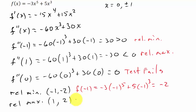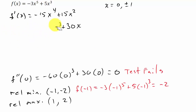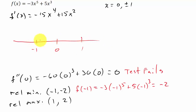Now for zero, the test fails, so that means we have to go back to the first derivative test. This is why you don't use the second derivative — a lot of times it's more work. To do the first derivative test, I've got to plot all of these on a number line and choose a number from each region.